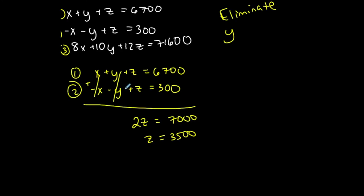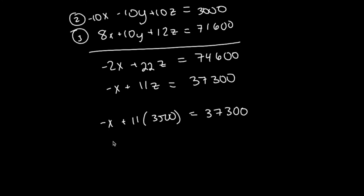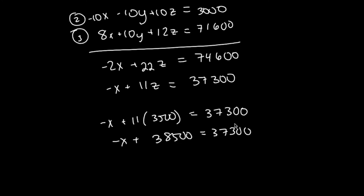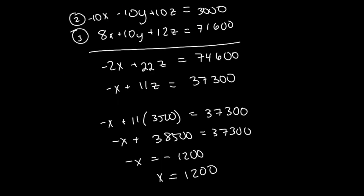We know z equals 3,500, so substituting: negative x plus 11 times 3,500 equals 37,300. That's negative x plus 38,500 equals 37,300, so negative x equals negative 1,200, therefore x equals 1,200. x is the amount invested at 8%.